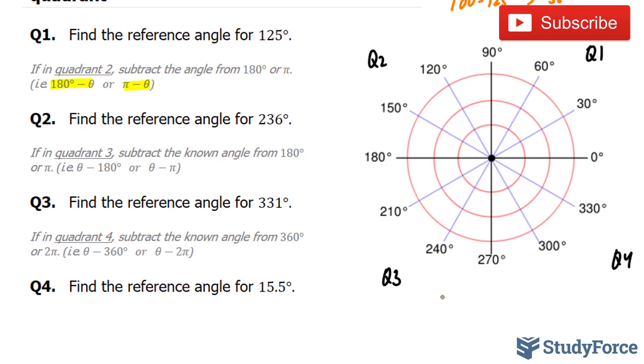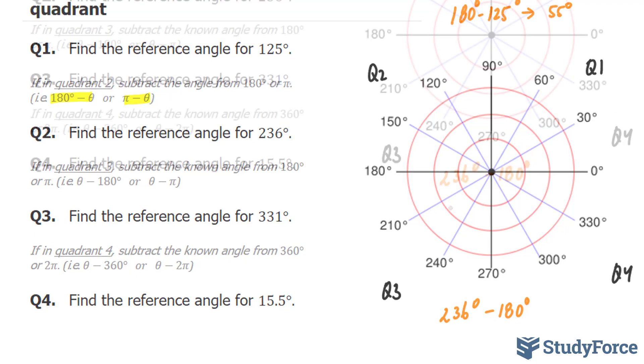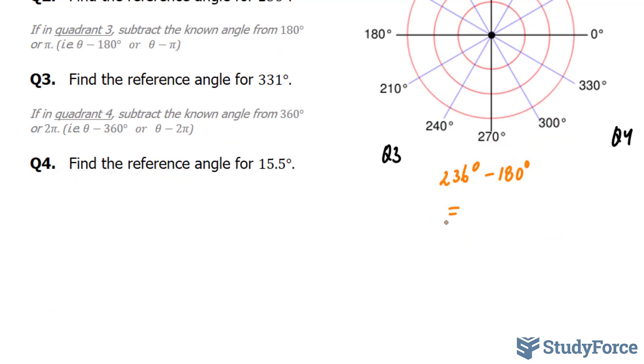Therefore for question 2, we'll take 236 minus 180. Notice the difference between this and question 1. In question 1, we took 125 from 180. 236 minus 180, that gives us 56 degrees.